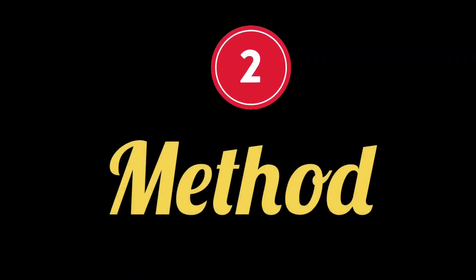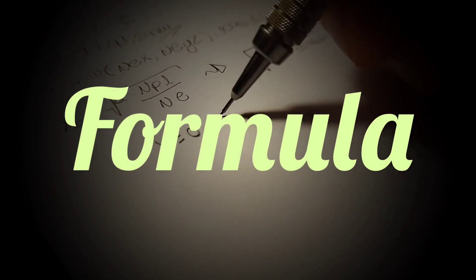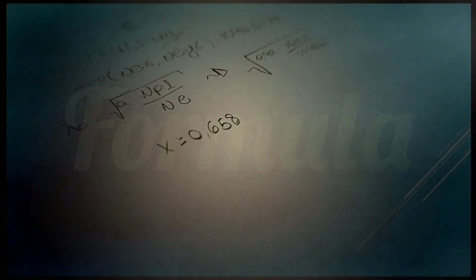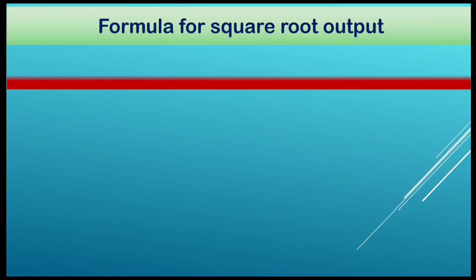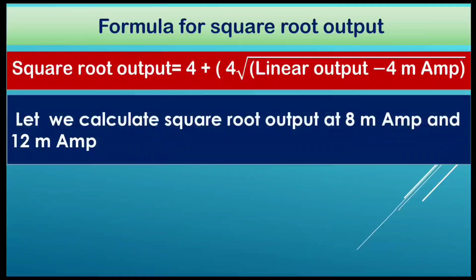Let's move to the second method. In this method, we will discuss a formula, and the square root output will be calculated. The square root output formula is: square root output in milliampere equals 4 plus 4 multiplied by the square root of (linear output minus 4).